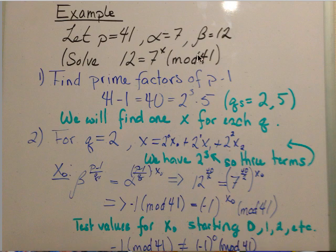The first step is to find the prime factors of p minus one. So 41 minus one is 40, which equals 2 to the third power times 5. Those are our prime factors of p, which we're going to call our q's. And we will find one x for each q.